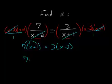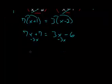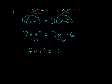So we have 7x plus 7 is equal to 3x minus 6. We can subtract 3x from each side so that all of the x's are now on the same side of the equation. So we have 4x plus 7 is equal to minus 6, and now we want to get the x's by themselves, so we can subtract 7 from each side.